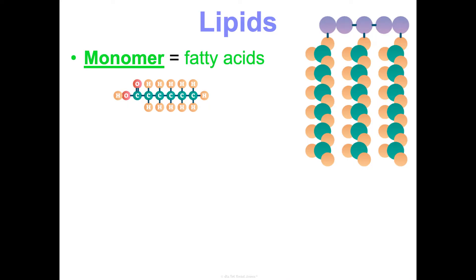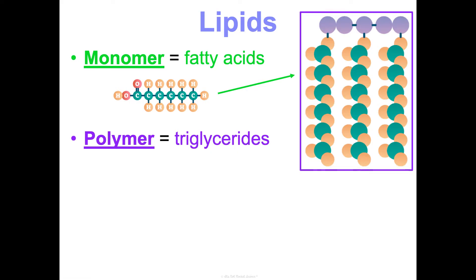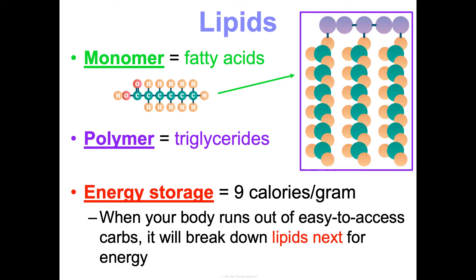There's no true monomer for lipids because there's some variety, but we generally think of fatty acids as the monomer — basically chains of carbons with hydrogens on them. The polymer is a triglyceride: three fatty acid chains and glycerol stuck together. In terms of energy storage, lipids store nine calories per gram — over twice as much as carbohydrates. But they're not as easy to access, so your body goes for carbs first and then lipids when those run out.